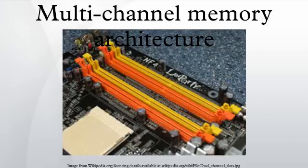In the fields of digital electronics and computer hardware, multi-channel memory architecture is a technology that increases the data transfer rate between the DRAM memory and the memory controller by adding more channels of communication between them. Theoretically, this multiplies the data rate by exactly the number of channels present. Dual-channel memory employs two channels, and the technique goes back as far as the 1960s, having been used in the IBM System/360 Model 91 and in the CDC 6600.